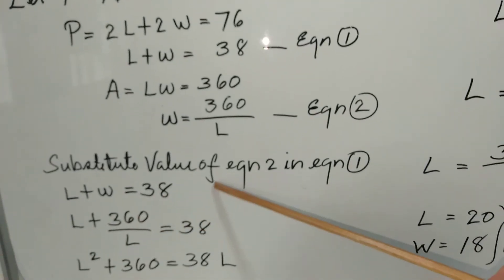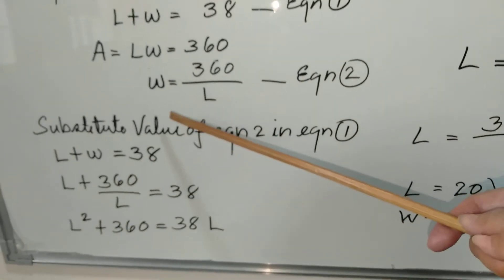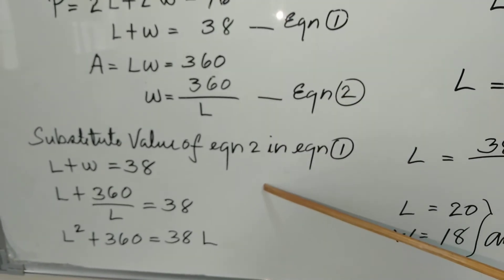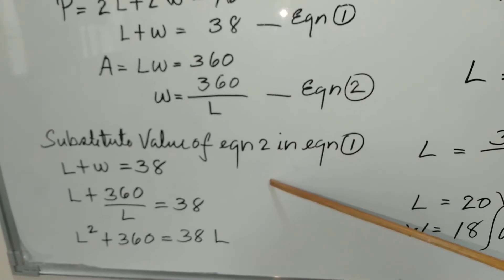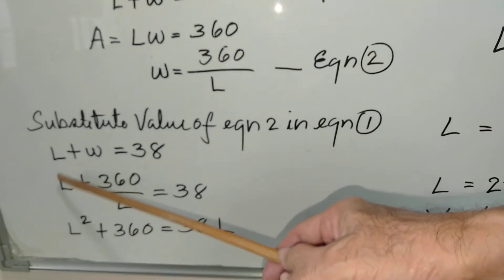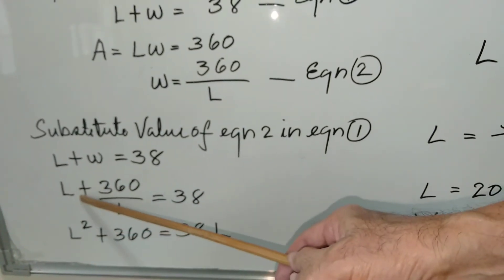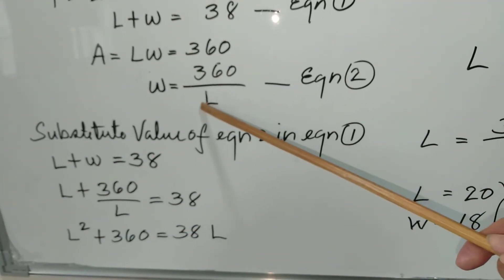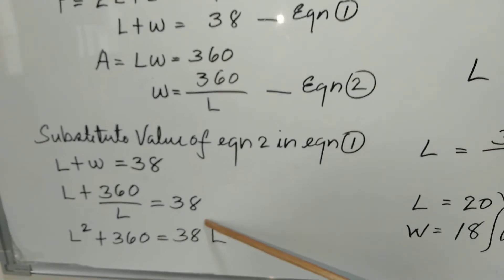We substitute the value of equation 2, which is W of equation 2, in equation 1. All we have to do is copy this one: L plus W is 38, L plus 360 over L from equation 2 equals 38.